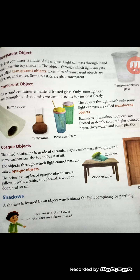Objects through which only some light can pass are called translucent objects. There are also some materials through which you cannot see anything. If I keep a book between you and me, you are not able to see my face because the book cannot allow light to pass through it — that means a book is an opaque object. Similarly, a pillow is an opaque object. Table, cupboard, and wooden door are all examples of opaque objects.